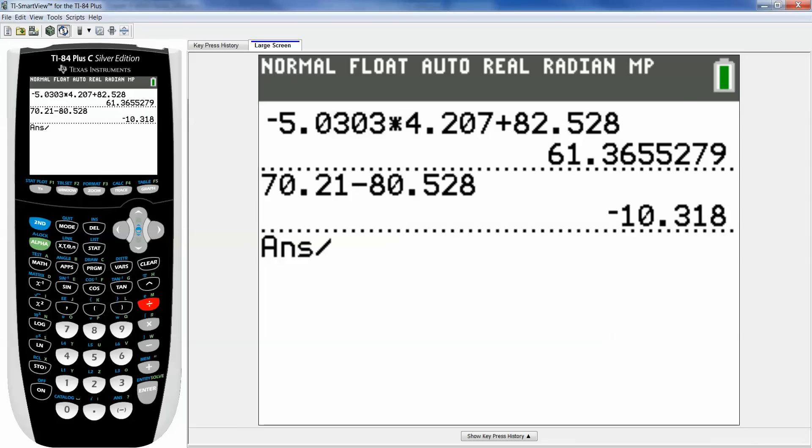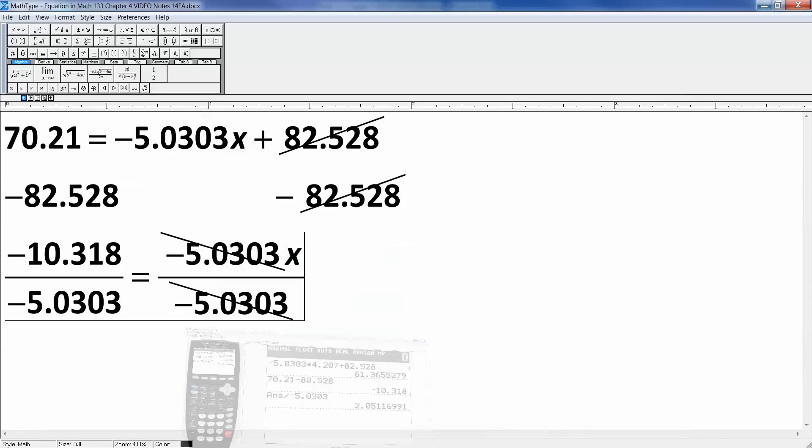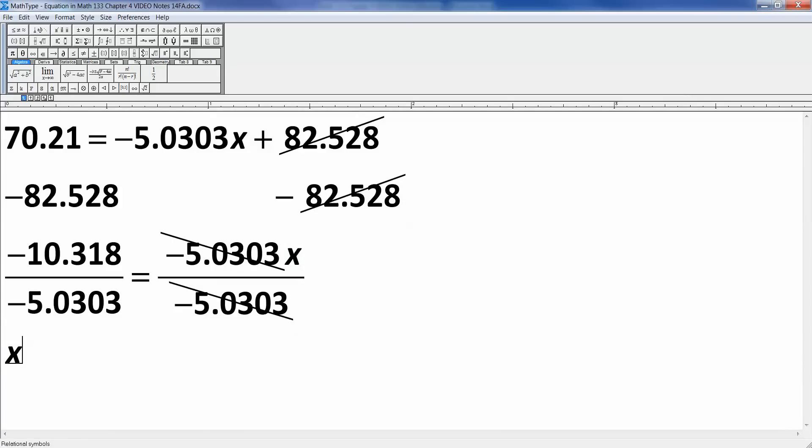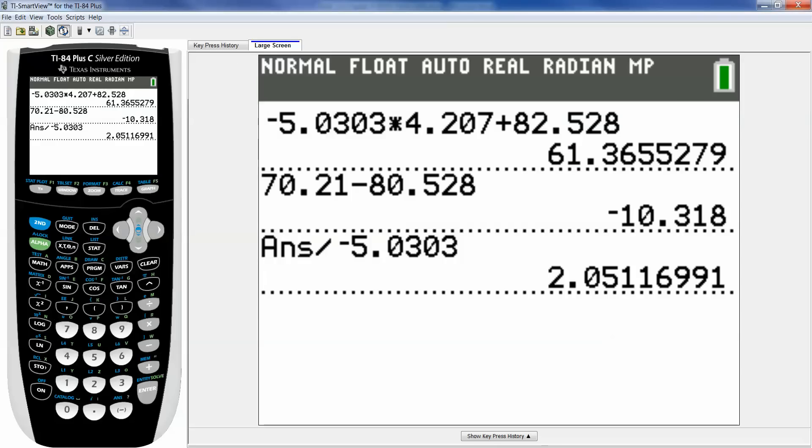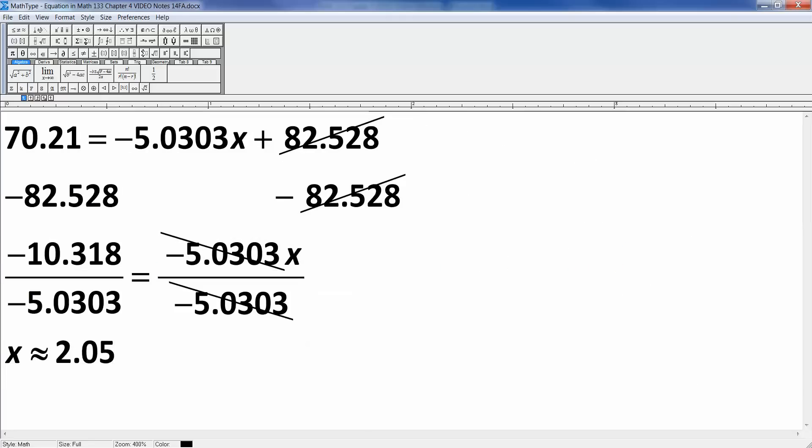So if you just press divide, it'll actually take the last answer, which was that number, negative 10.318. Or you could type it. Oops, and I want negative. So I'm going to grab the negative down here. That's this little symbol, 5.0303. Careful not to use the minus sign when you mean negative. They're two different things. And we get 2.0511. So we get X is, and now this is all squiggly because we don't really think it's this. We think it's about this, right? So what was that? 2.051. And there you have your answer.